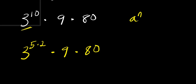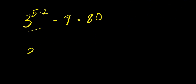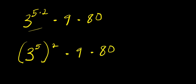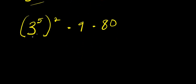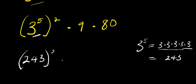Now, three to the power of ten can be expressed as three to the power of five times two. Remember, if you have a to the power of n times m, this equals a to the power of n all raised to the power of m. Applying this, we have three to the power of five, raised to the power of two, times nine times eighty. Three to the power of five equals three times three times three times three times three, which is two hundred and forty-three. So we have two hundred and forty-three, raised to the power of two, times nine times eighty.